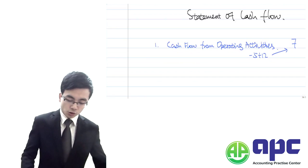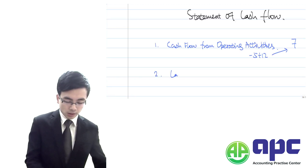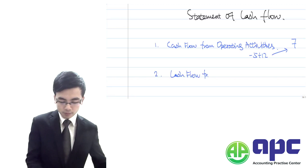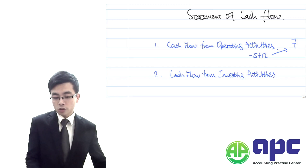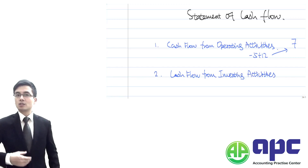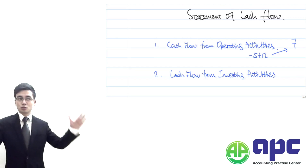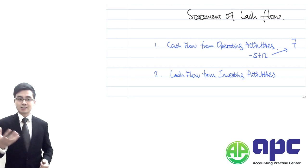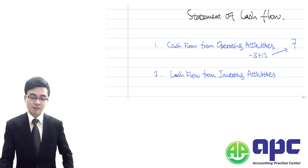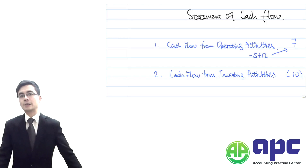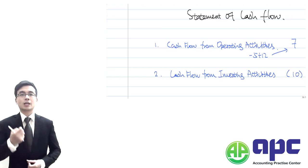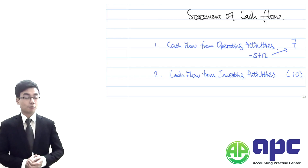Secondly, it should include the cash flow from the investing activity. It's something to do with your non-current asset. For example, you spend $10 in buying machinery. That $10 needs to be included into the investing activity, so you have minus 10, or you call it bracket 10, because you spend money out in buying the machinery for your own.